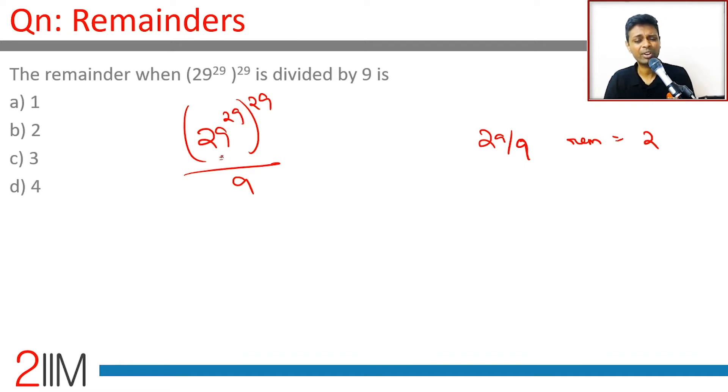29 multiplied with itself a large number of times will give us a remainder. We can multiply 29 by itself so many times and find the remainder, or we can find the remainder and multiply that by itself so many times. This is nothing but 2^29 whole power 29. Let's look at powers of 2.